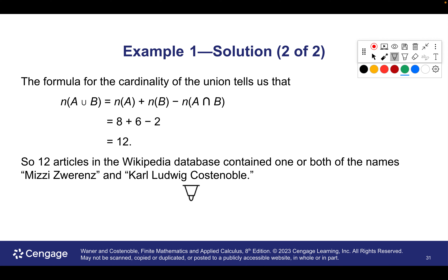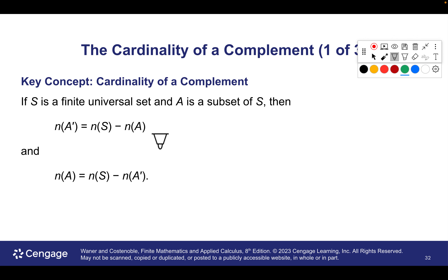Sometimes they don't give us the set but they tell us how many are in each and how many are in both A and B — that would be the intersection — so we can subtract it off. That's where we might need to use the formula, and that usually comes when we get into probability. The idea of the complement — whatever's in A, the complement is everything in the universal set minus A. Together they make the universal set. So it makes sense that if you take the number in the universe and subtract A, you'll get what's in the complement.